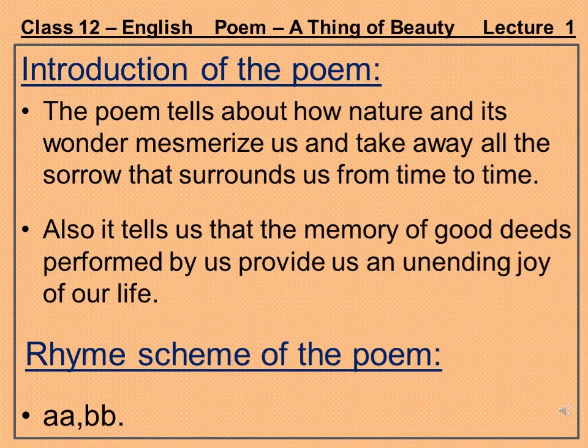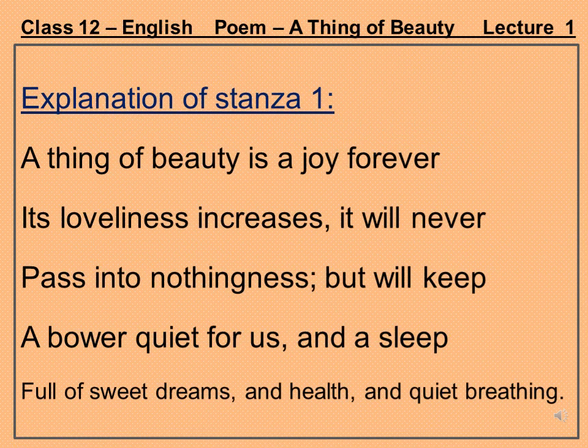This poem is written with a rhyming scheme. You will find the rhyming words at the end of every line. The rhyming scheme of this poem is AABB. Now I will explain the poem to you. The poet John Keats starts the poem with the lines: 'A thing of beauty is a joy forever, its loveliness increases, it will never pass into nothingness, but will keep a bower quiet for us, and a sleep full of sweet dreams, and health, and quiet breathing.'